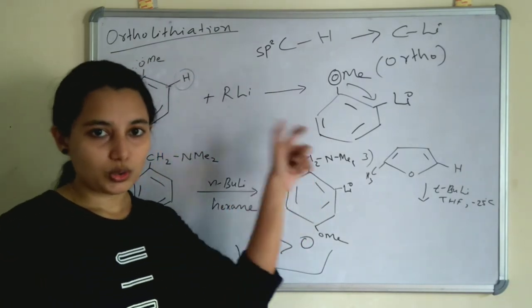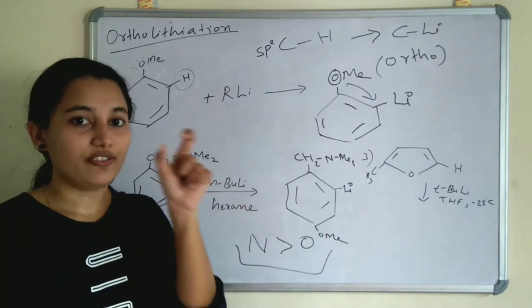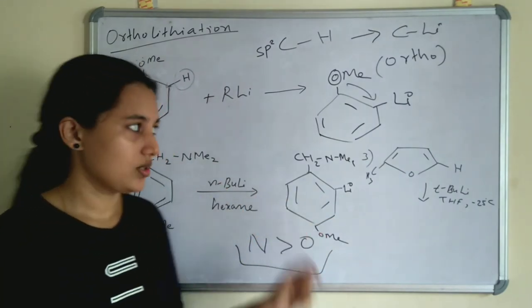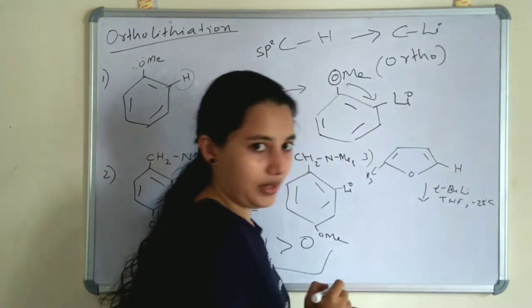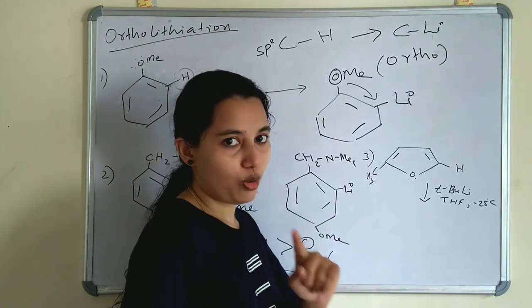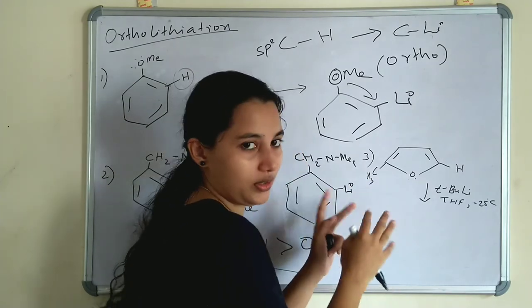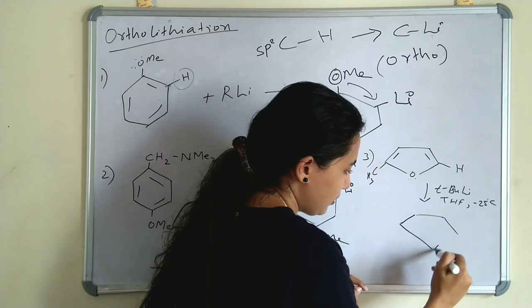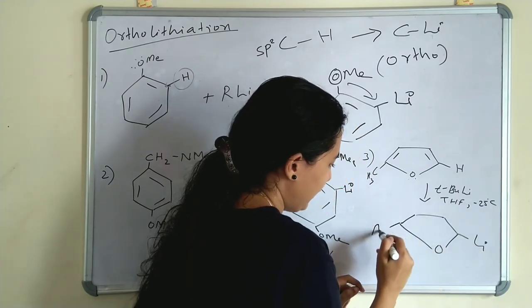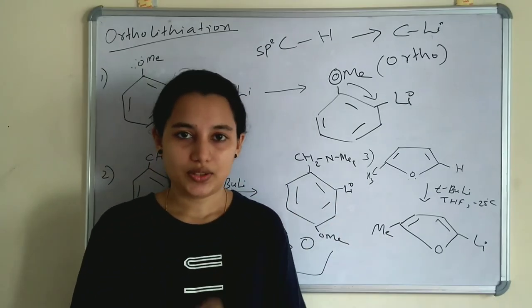Ortholithiation is the replacement of a C–H bond with C–Li at the ortho position of a functional group containing non-bonding electrons, like nitrogen and oxygen. In the third example, an OMe group is present with a methyl group on one side blocking that position. So ortholithiation occurs on the other ortho position of oxygen, and the product has lithium at that ortho position, with the OMe and C–CH₃ bonds unaffected.